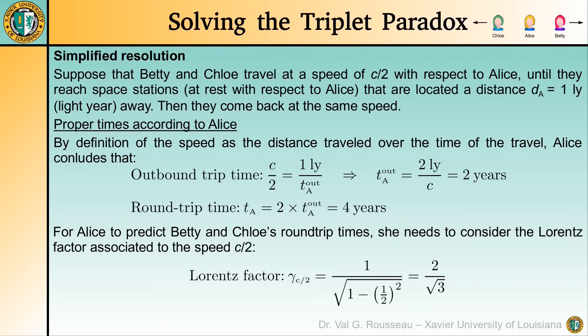In the simplified version of the problem, we assume that Betty and Chloe are traveling at speed c/2 with respect to Alice until they reach some space stations that are at rest with respect to Alice's station, and then they come back at the same speed. Betty and Chloe's destinations are located one light year from Alice. From Alice's point of view, she is at rest and Betty and Chloe are traveling at the same speeds in opposite directions. The outbound trip time is the distance divided by the speed, giving 2 years. By symmetry, the inbound trip takes the same time, so the round trip time that Alice observes is 4 years.